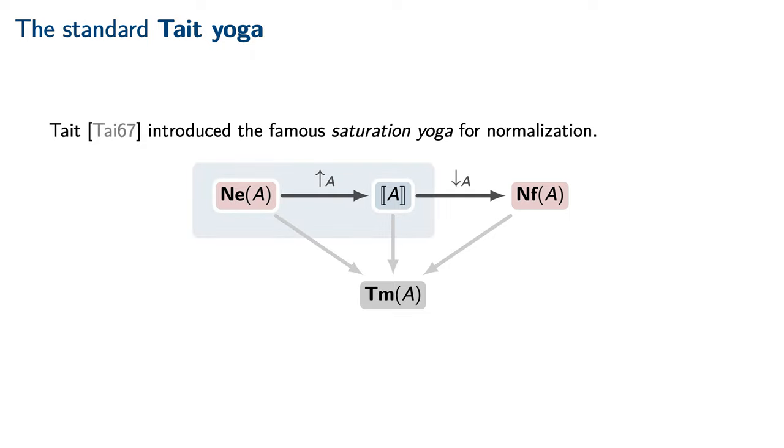In particular, a neutral form can be reflected into an element of the interpretation, which is called a computable element, and a computable element can be reified into a normal form. These reflection and reification maps must commute with the projection of equivalence classes of type terms. For example, the reification map must not take the true boolean to the normal form of the false boolean.